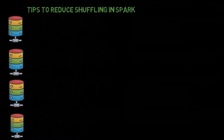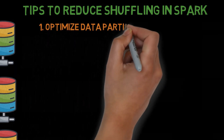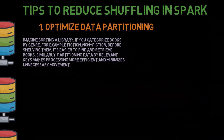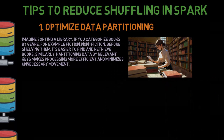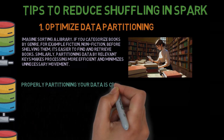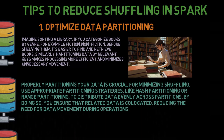Here are a few tips to reduce shuffling in Spark. First, optimize data partitioning. Imagine sorting a library — if you categorize books by genre, such as fiction or nonfiction, before shelving them, it's easier to find and retrieve books. Similarly, partitioning data by relevant keys makes processing more efficient and minimizes unnecessary movement. Use appropriate partitioning strategies like hash partitioning or range partitioning to distribute data evenly. By doing so, you ensure that related data is collocated, reducing the need for data movement during operations.